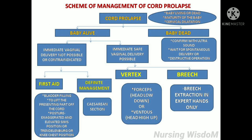Scheme of management of cord prolapse: First, assess whether the baby is alive or dead by checking FHR. Next, assess maturity of the fetus — gestational age of more than 37 weeks or not. Then assess cervical dilatation. If the baby is dead with no FHR, confirm with ultrasound, then wait for spontaneous vaginal delivery or perform a destructive operation. If the baby is alive, assess whether immediate safe vaginal delivery is possible. If it is vertex presentation, delivery can be assisted with forceps and ventouse. If it is breech presentation, breech extraction should be done only by experts.